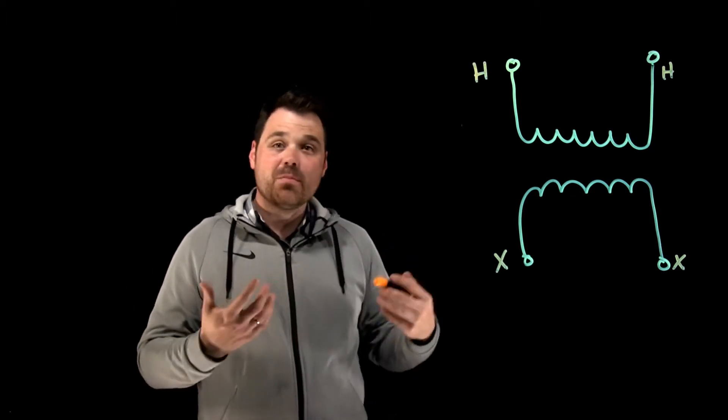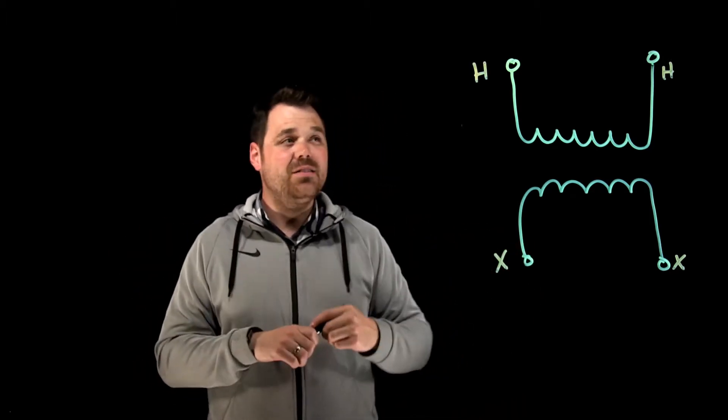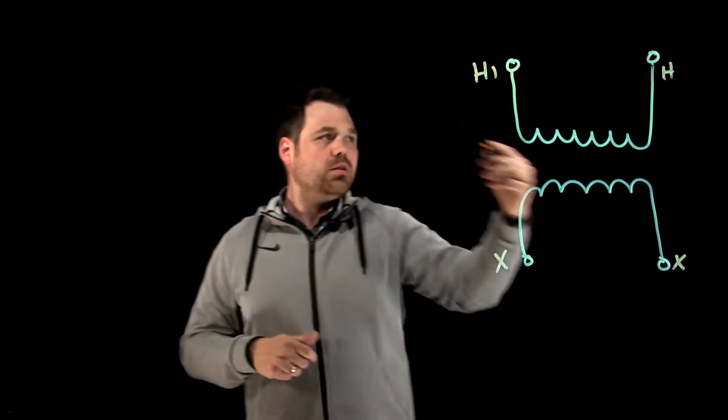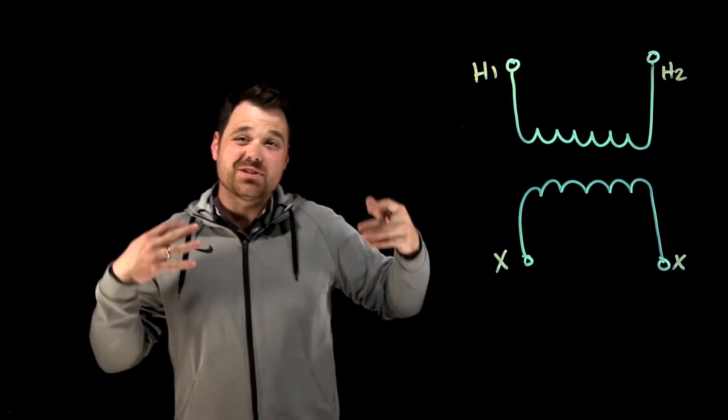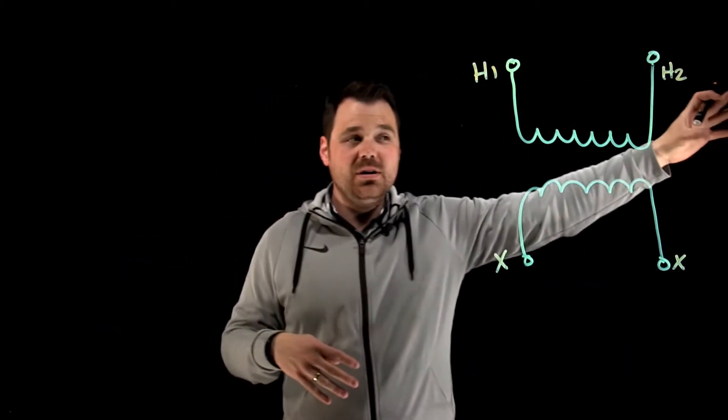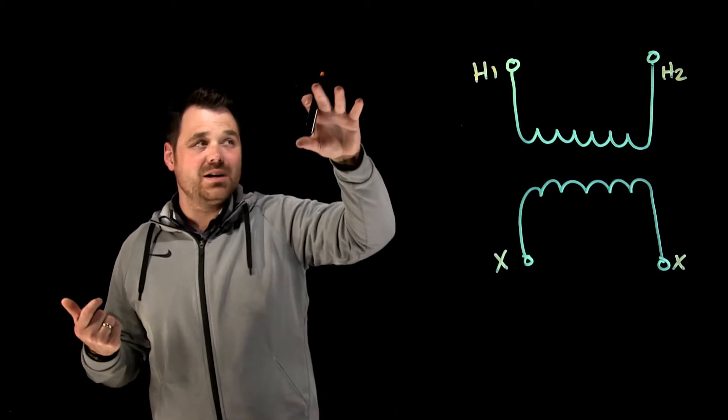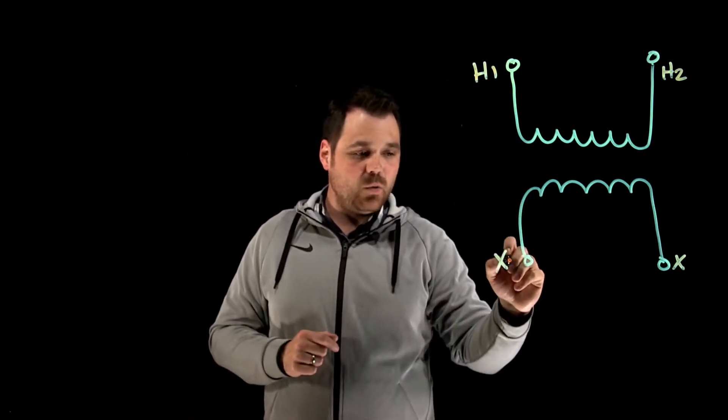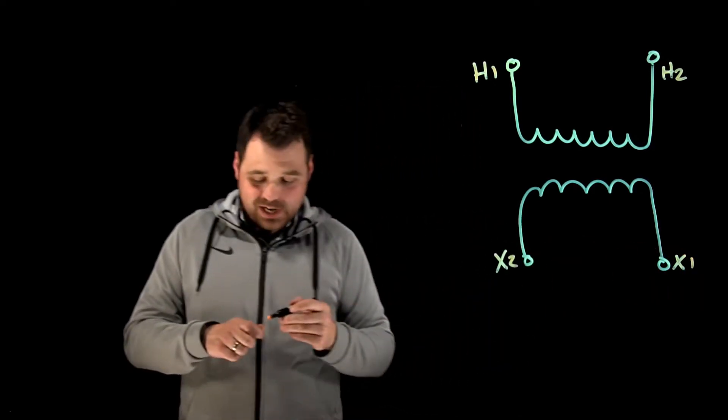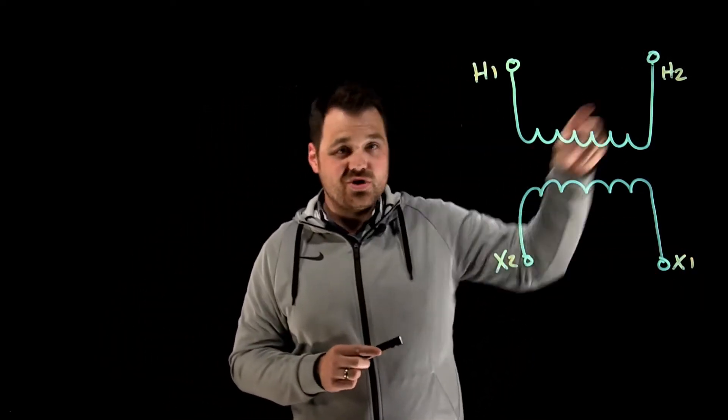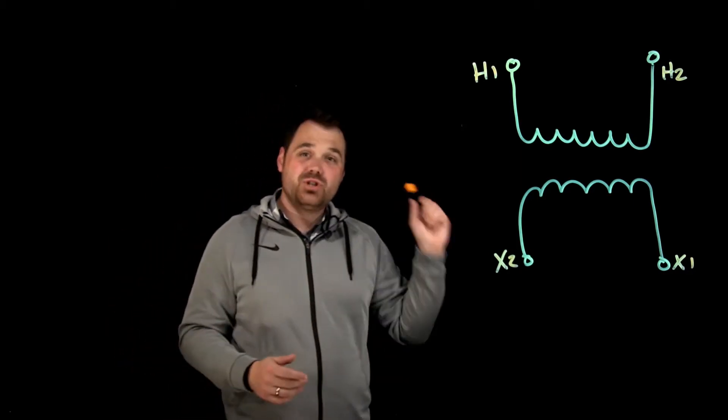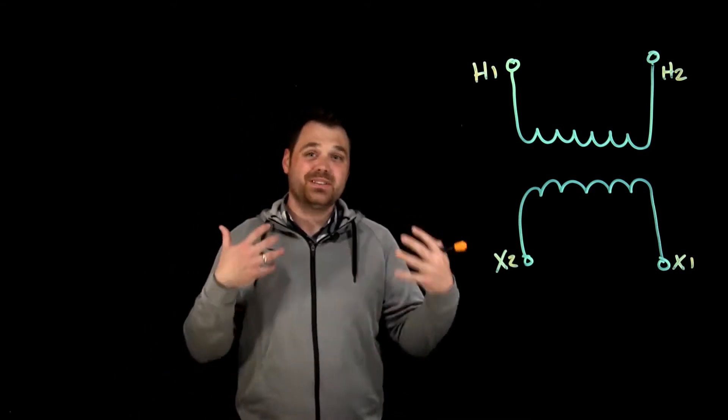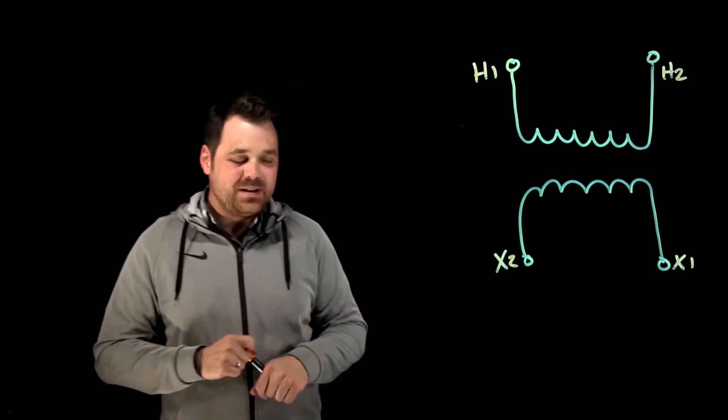They're also going to have numbers because each terminal is identified. H1 will typically be in the top left when you're looking at a drawing. The other side of that winding is H2. If it's a multi-winding transformer with multiple windings on the high side, it'll be H1 through 4 or 6 or whatever. Down lower, we have X1 and X2. Often, you'll see them in the opposite corners, and there's a reason for that which you can check out in the video up above. It has to do with the polarity of the windings.